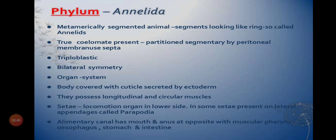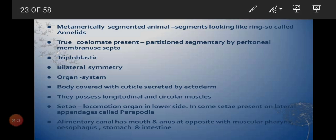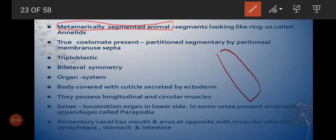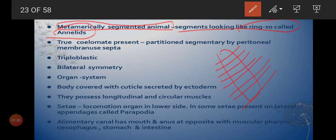Next phylum we will look at is Annelida. Annelida means 'annulus' — little ring. This is the characteristic feature: the body is metamerically segmented, with small segments that look like rings. So these organisms are called annelids because 'annulus' means a little ring — small ring-like segments can be seen throughout their body.